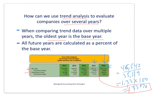This trend analysis covers five years — 2010, 2011, 2012, 2013, and 2014 — so we can get a sense of what's happening with Coca-Cola with their net sales and operating income relative to 2010.